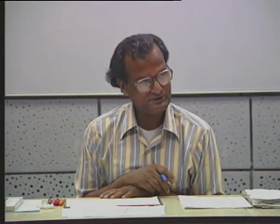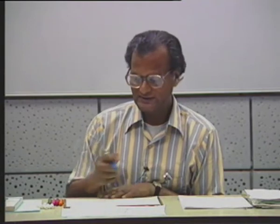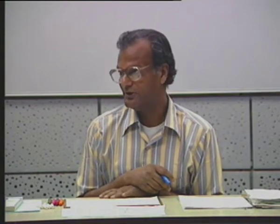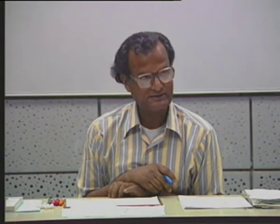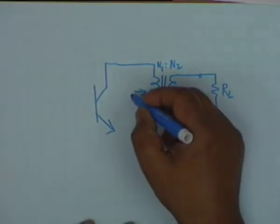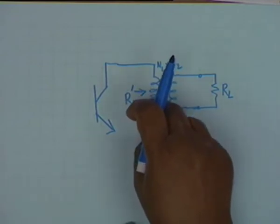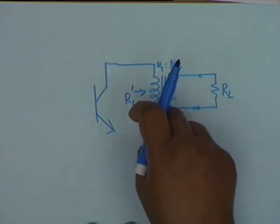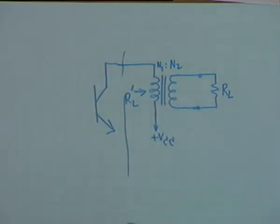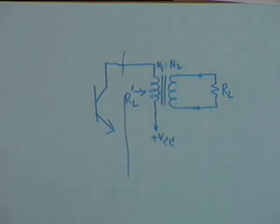The three benefits of transformer coupling are: first, no dissipation in R_C; second, isolation of DC from the load, since only varying currents are transformed and a steady current is not; third, a transformer allows impedance matching. By the maximum power transfer theorem, the load should be the complex conjugate of the source resistance. By varying the turns ratio N1:N2, the effective load seen in the primary — R_L' — can be made equal to the Thevenin equivalent resistance looking back at the transistor, ensuring maximum power transfer.